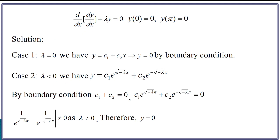Here we are trying to solve the first example. If lambda is 0, then obviously y = c₁ + c₂x. Now if you use the boundary conditions, you will get y = 0. This is a trivial solution. Since we know all homogeneous differential equations are satisfied by the trivial solution, our main motive to solve a differential equation is to find non-trivial solutions. So we are not interested in this trivial solution.